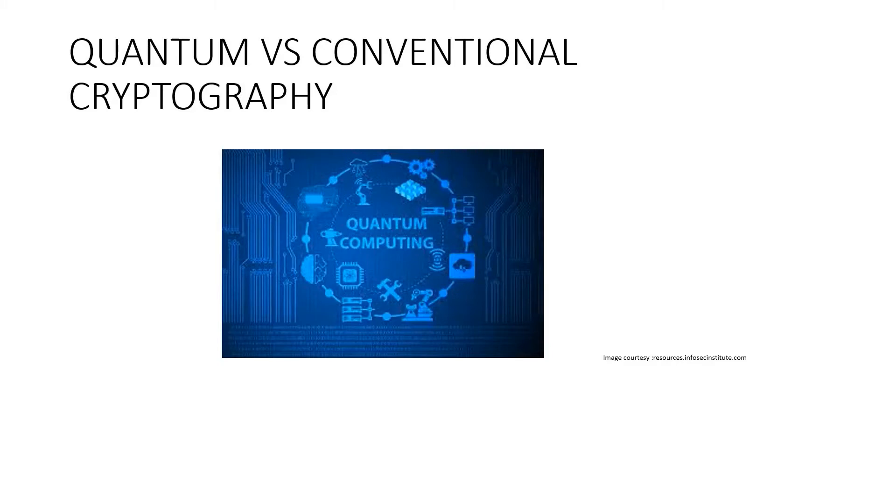Classical cryptography comes with two main techniques, symmetric and asymmetric cryptography.